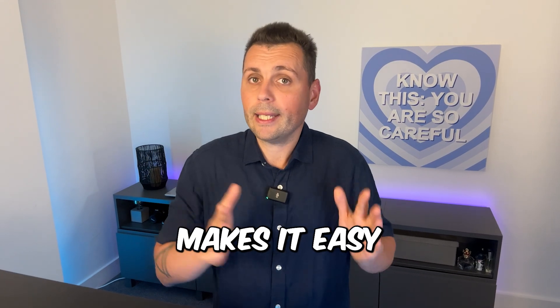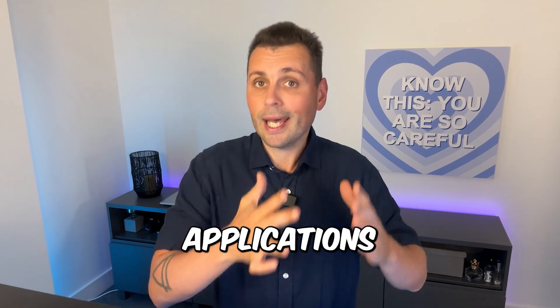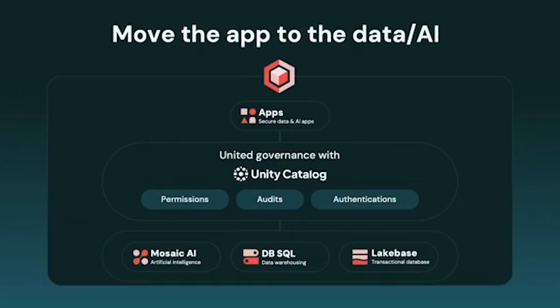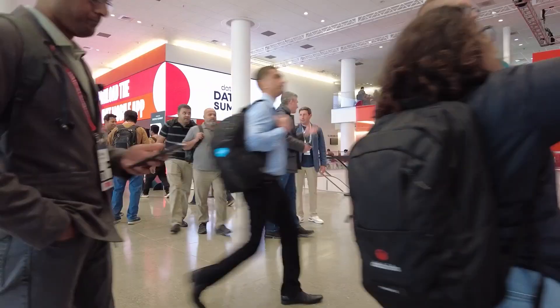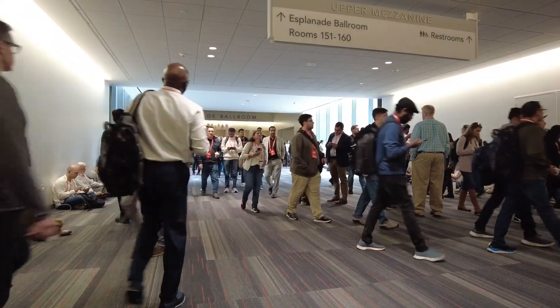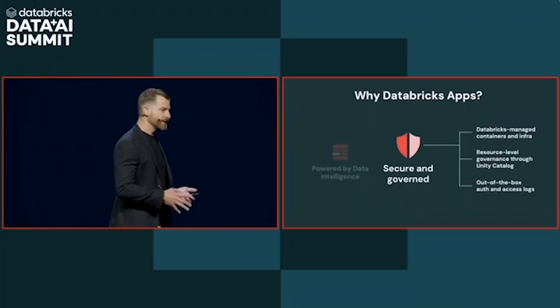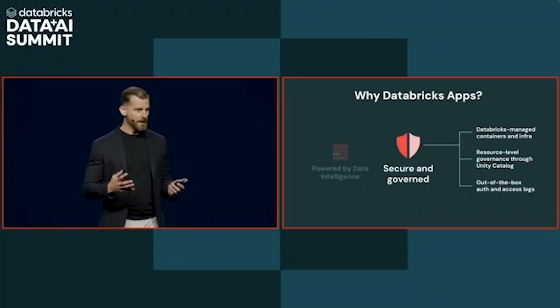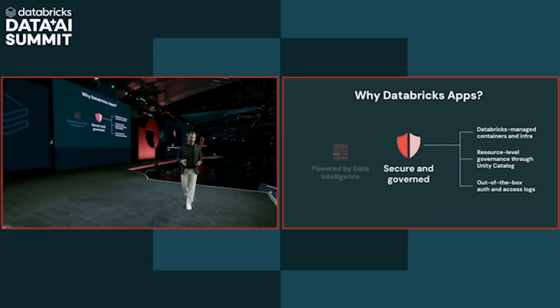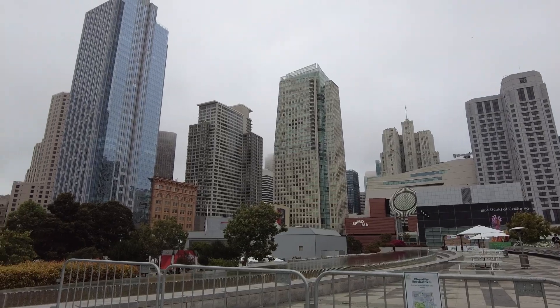Databricks Apps has over 2,500 customers actually building their own applications. It makes it easy to build secure and governed data applications deployed directly in Databricks, governed through Unity Catalog. This represents a broader architectural shift of moving the app to the data and AI, versus moving the data and AI to the app. It's managed containers for Streamlit, FastAPI, or React apps that inherit Unity Catalog permissions. You get data plus backend plus UI all hosted together, no need to spin up and manage your own stack — less DevOps hassle, secure by default, and fast time to insights.